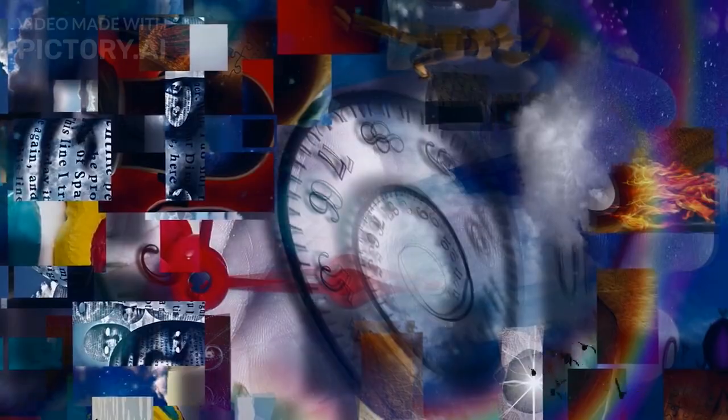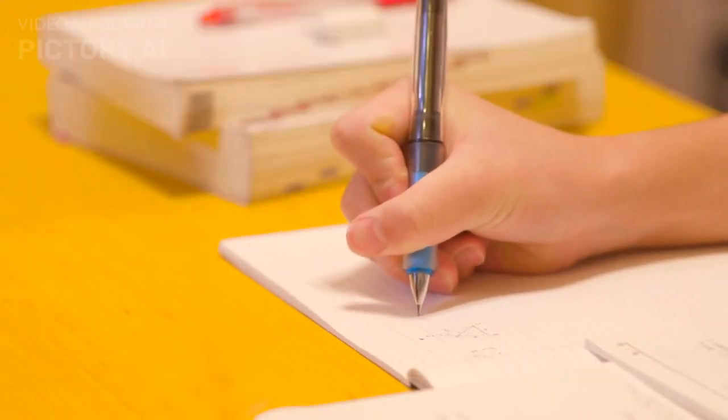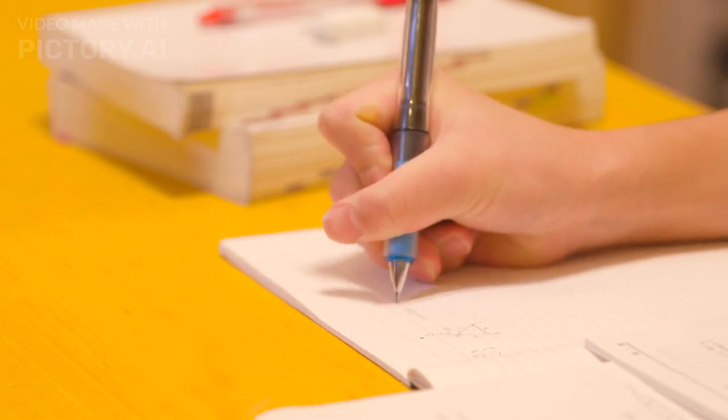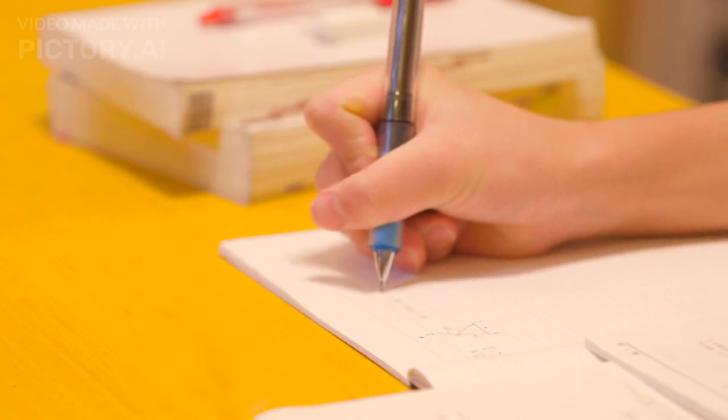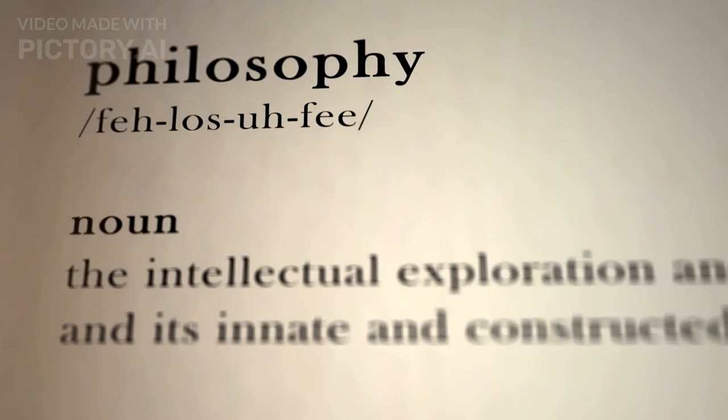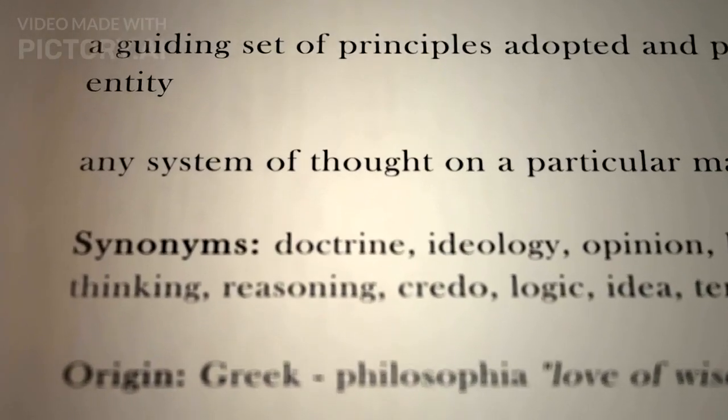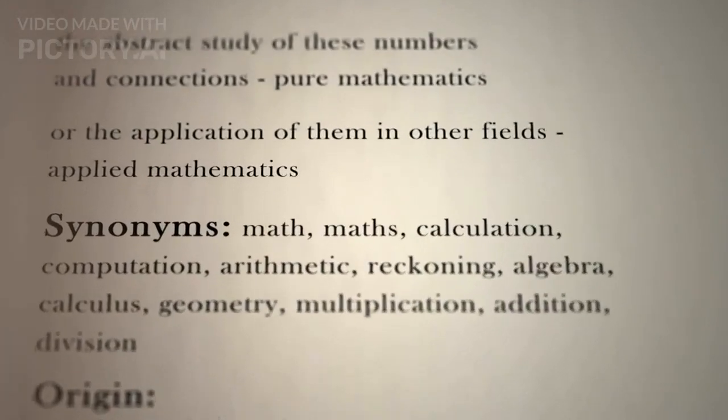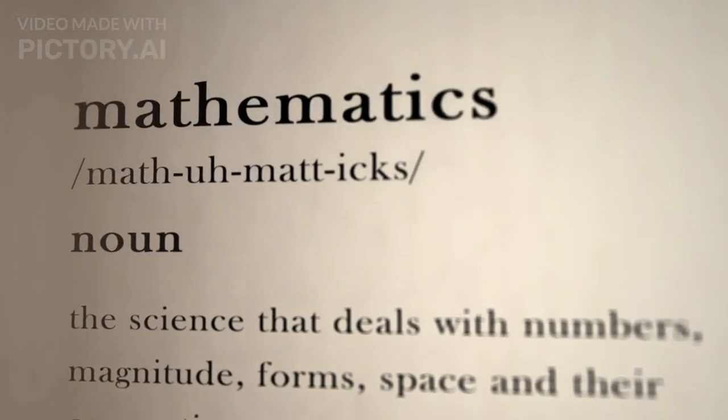Complexity of Human Experience: Many philosophical questions pertain to complex and multifaceted aspects of human experience, such as the nature of consciousness, free will, moral dilemmas, and personal identity. While mathematics is excellent at dealing with abstract concepts and quantitative relationships, it may struggle to capture the full depth and richness of these human experiences. Subjectivity and Value: Philosophy often addresses subjective matters, such as ethics and aesthetics, which involve individual and cultural values. These subjective dimensions may resist easy translation into mathematical terms, as mathematical language typically deals with objective, quantifiable aspects of reality.